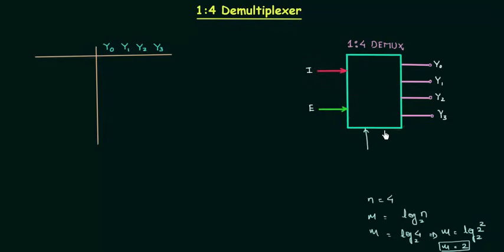Number of select lines are 2. Let me draw them. s0, s1 are the 2 select lines and I have already made the table in which we are having 4 outputs y0, y1, y2, y3 and we will have enable s1, s0. When enable is low it is 0 whatever be the value of s1 and s0 all the outputs are going to be 0.